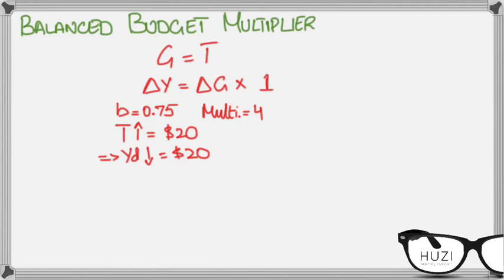This means that because of the marginal propensity to consume of 0.75, consumption will fall by 20 times 0.75, which is 15, and your savings will fall by 5.